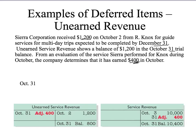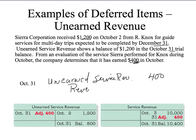We must recognize revenue. I reduce my liability: debit unearned service revenue by $400, and I recognize revenue. Remember the accrual basis — we recognize revenue when we earn it. And we earned it, therefore we make that adjustment. We have now increased our revenue and decreased our unearned service revenue.